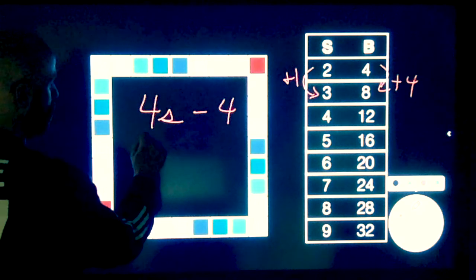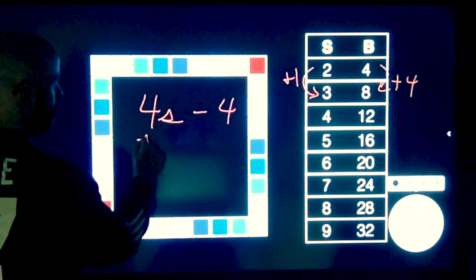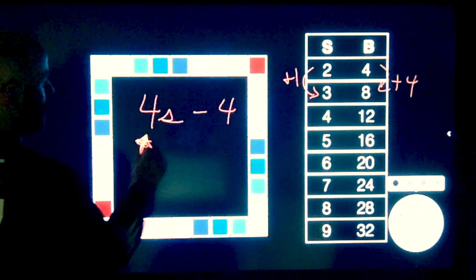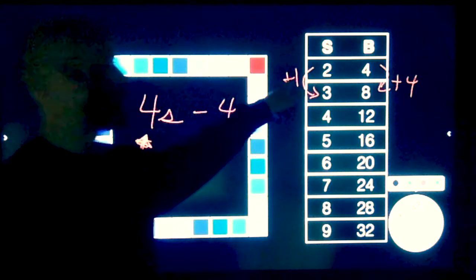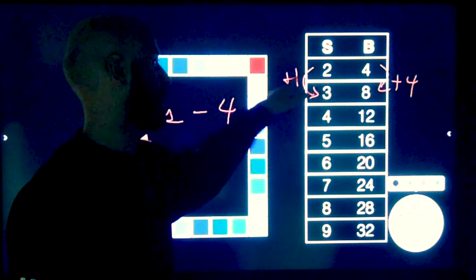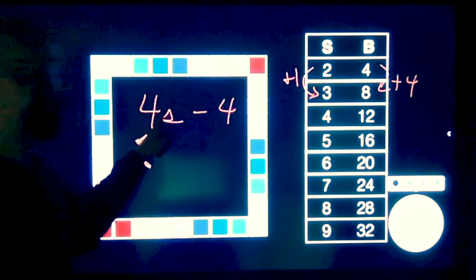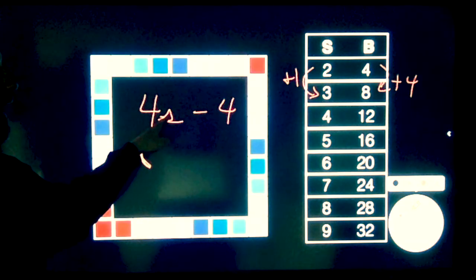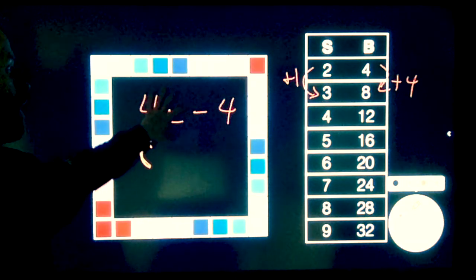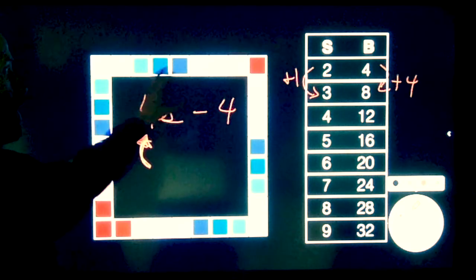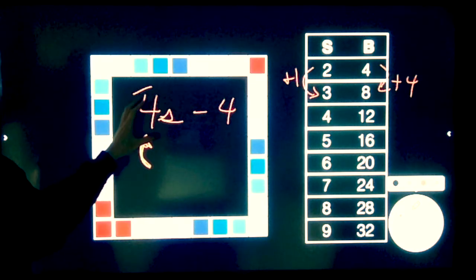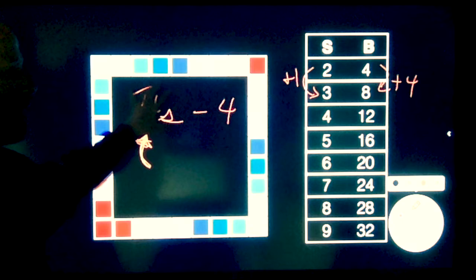So this four that multiplies the side length is a representation of what's happening here. Every time I increase the side length by one, I increase the number of squares on the border by four. That's where that part of the formula comes from.